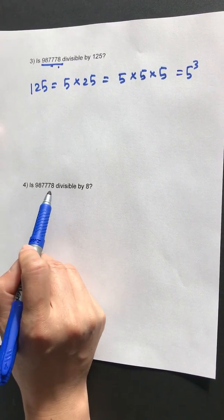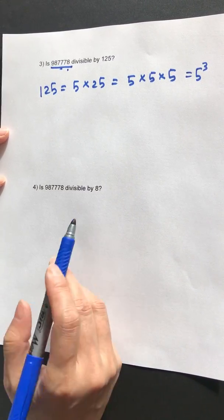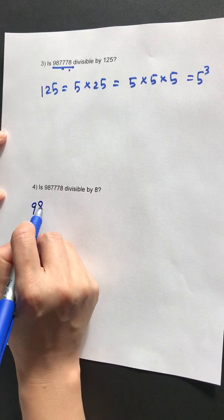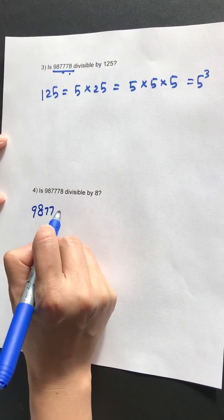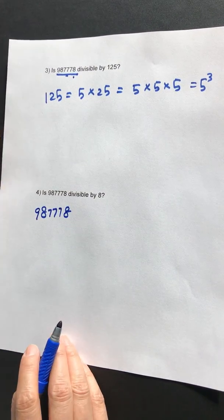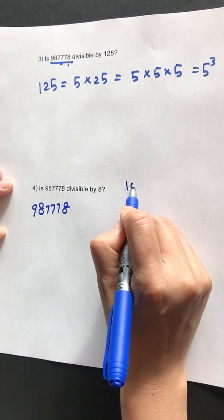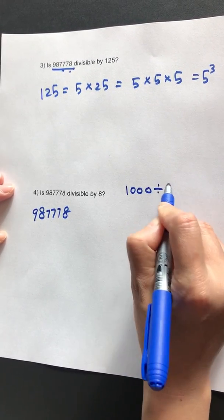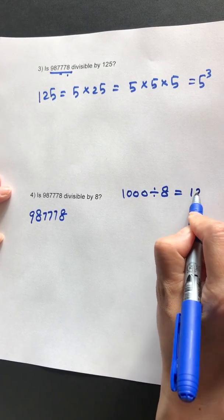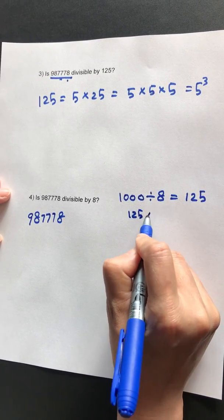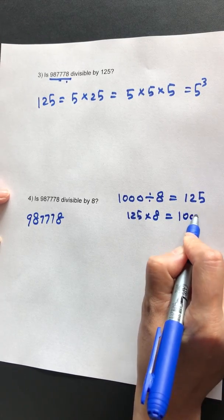Number four: is this number divisible by 8? We need to break this number down. One thing to remember is that 1,000 divided by 8 is 125, or 125 multiplied by 8 is 1,000.